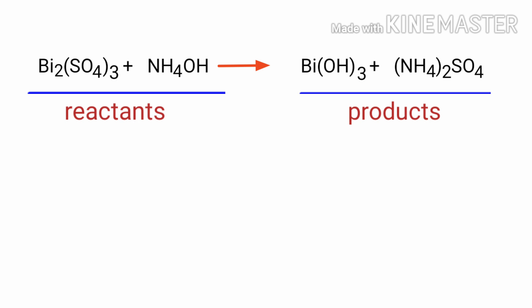In this equation the reactants are bismuth sulphate and ammonium hydroxide and the products are bismuth hydroxide and ammonium sulphate.